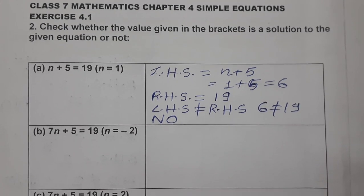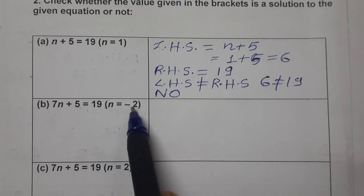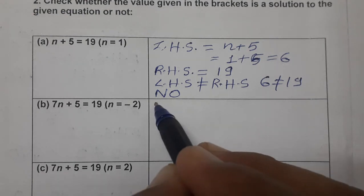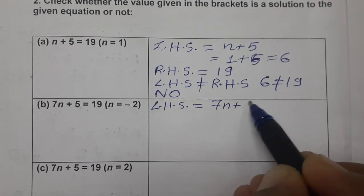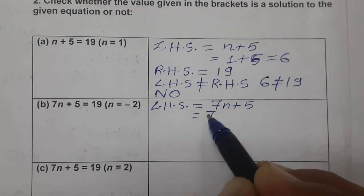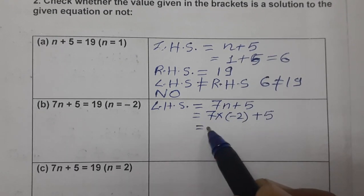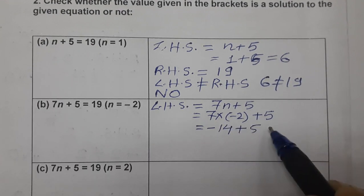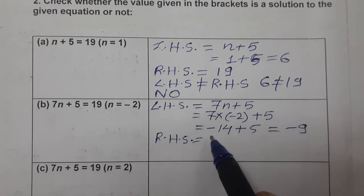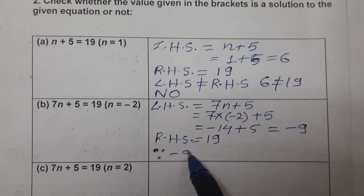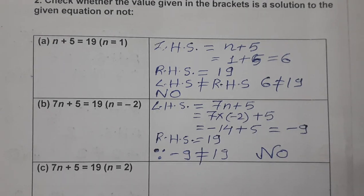Now the second part: the equation is 7n + 5 = 19, and this time we check for n = −2. Left hand side is 7n + 5. Putting n = −2: 7 × (−2) + 5 = −14 + 5 = −9. The RHS is 19. Since −9 is not equal to 19, it is also not the solution of the equation.